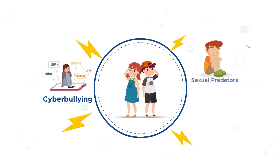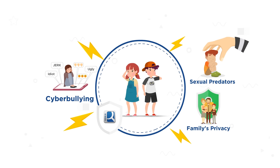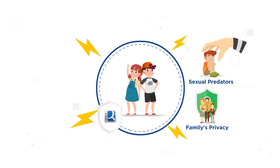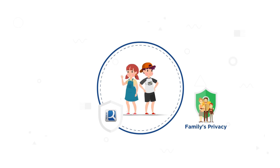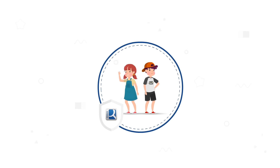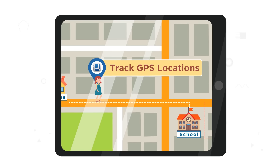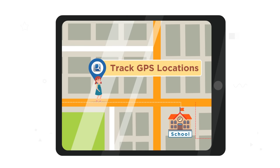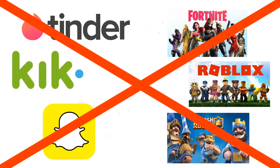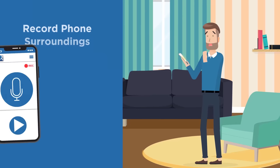It helps you monitor your children's online activities, know whether they are being cyberbullied or in contact with sexual predators, or leaking personal information online. With iKey Monitor, you can track their GPS locations, block inappropriate apps or games, and record their phone surroundings.